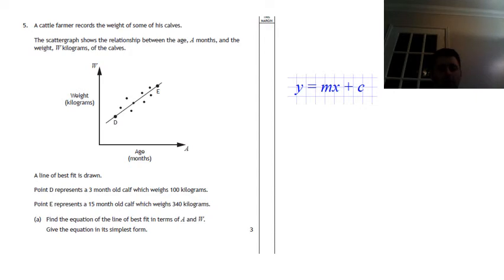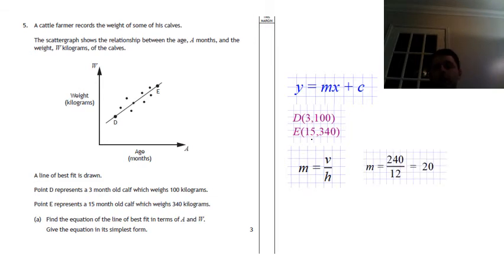We've got a point D and a point E here. 3 along 100 up, 15 along 340 up. So we've wrote the two points there. The gradient is the vertical difference, the horizontal difference. It goes from 100 to 340, 240 difference. 3 to 15, 12 difference. So it will be 240 over 12, and that gives you 20.